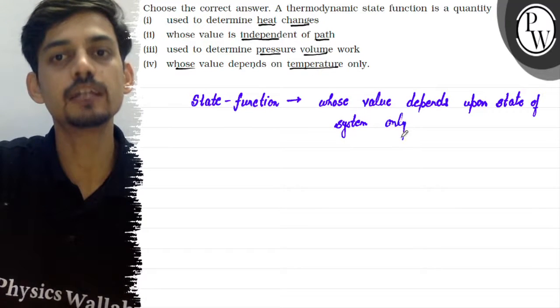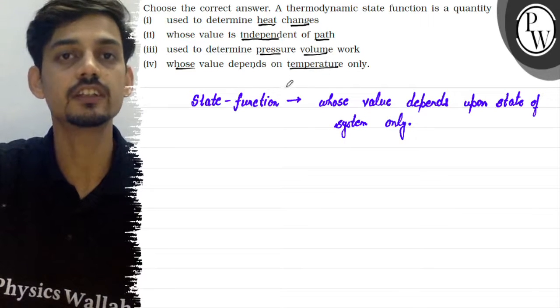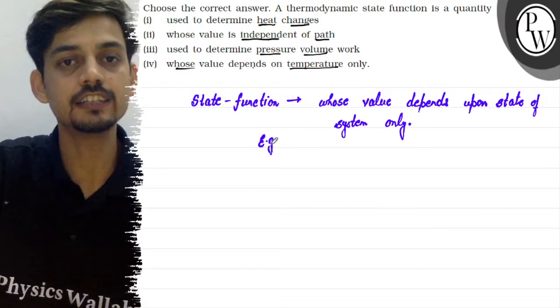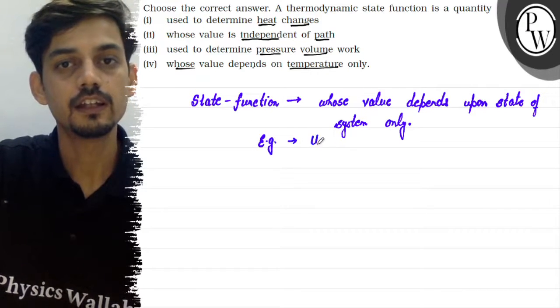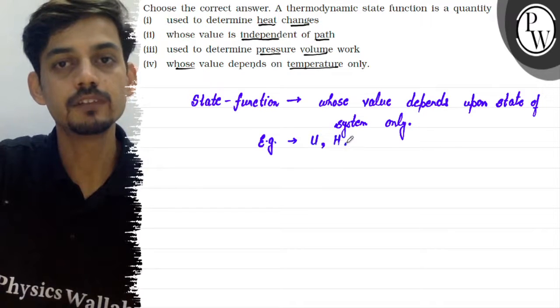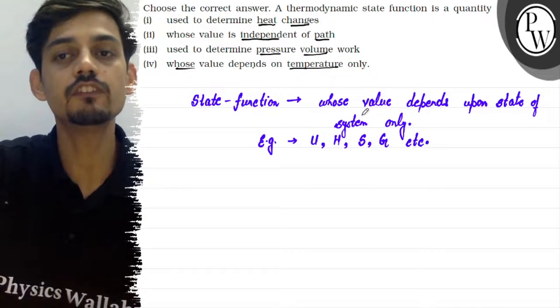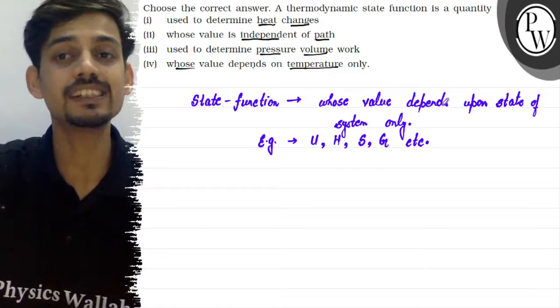As thermodynamic functions, state functions - we can take examples like internal energy, enthalpy of the system, entropy of the system, Gibbs energy of the system, etc. These are functions whose value depends only upon the state of the system.